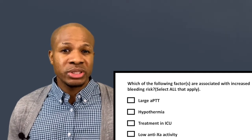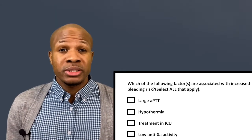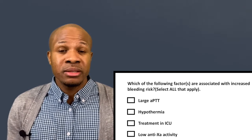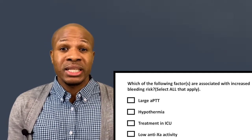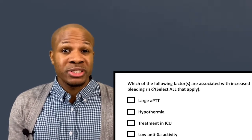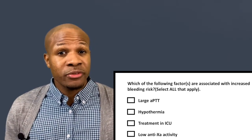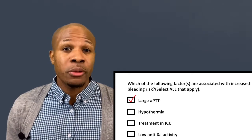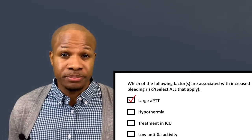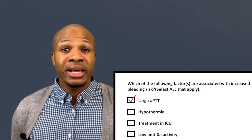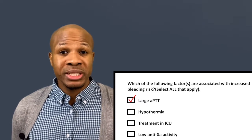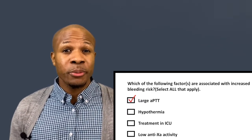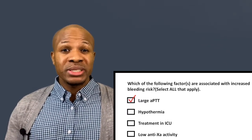If a person has a high or large APTT, that means it takes a long time for their blood to clot. If it takes a long time for your blood to clot, you are at risk of bleeding. So large APTT is correct. Answer choice B says hypothermia — this one is counterintuitive, because lower temperature might make you think blood would more readily solidify.